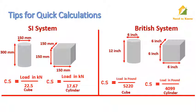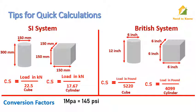These are some conversion factors used in compressive strength calculations: 1 megapascal is equal to 145 psi, and 1 kilonewton is equal to 1000 newtons. Thanks for watching. Stay tuned.